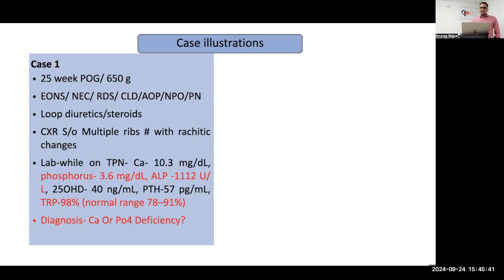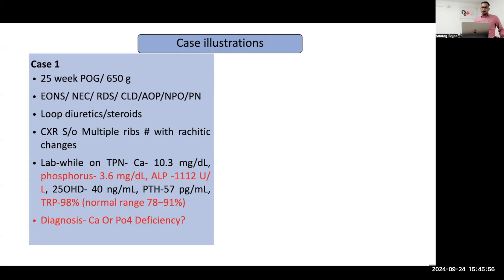Investigations showed calcium was normal, phosphorus was low, ALP was on the higher side, vitamin D and PTH were normal, and the total tubular resorption of phosphate was very high. The normal reference range for preterm is between 78 to 91%. So TRP is high and PTH is normal — this is consistent with phosphorus deficiency.